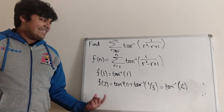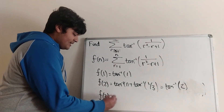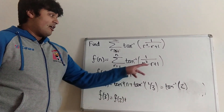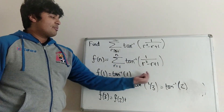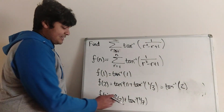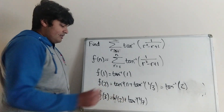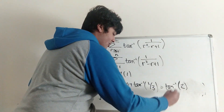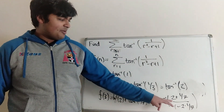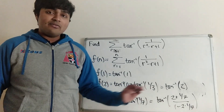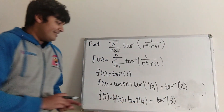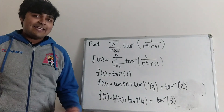It might appear as if f(n) equals inverse tangent of n. Let's check n equals 3. f(3) equals f(2) plus the r equals 3 term: 3 squared minus 3 plus 1 equals 7, so plus inverse tangent of 1 over 7. f(2) is inverse tangent of 2, so f(3) is inverse tangent of 2 plus inverse tangent of 1/7. Using our formula: (2 plus 1/7) over (1 minus 2 times 1/7) — the numerator is 15/7, the denominator is 5/7, and 15/7 divided by 5/7 is 3. So f(3) equals inverse tangent of 3. It really does seem like f(n) equals inverse tangent of n.